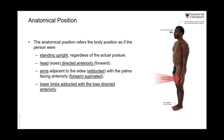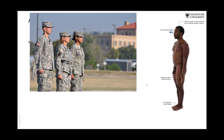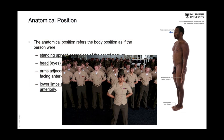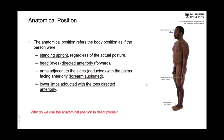As you can see here, the forearm is rotated so that the palms are facing forward. This is what we call supination of the forearm. It is not the same as a soldier standing at attention or at ease — it is specifically the anatomical position.